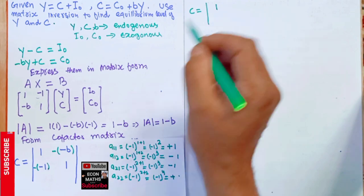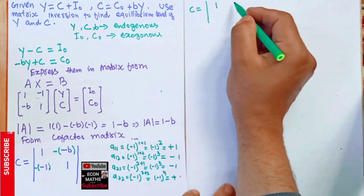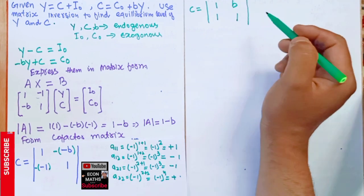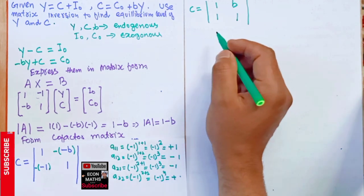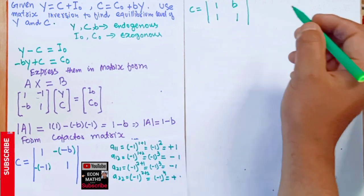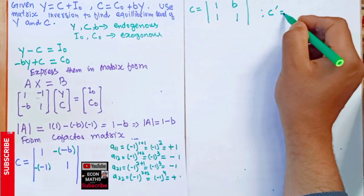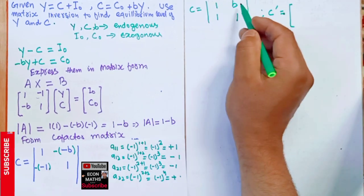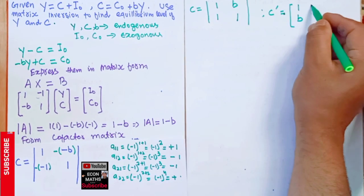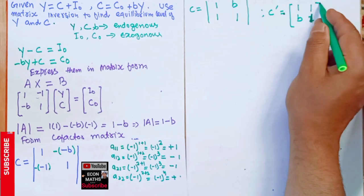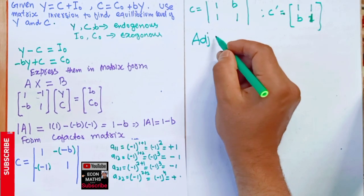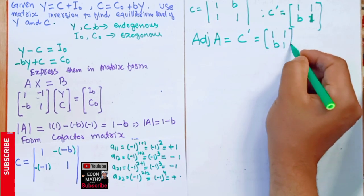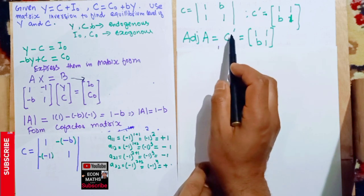Applying these signs, the cofactor matrix becomes: [1, b; 1, 1] — since the element at a₁₂ was −b with a negative sign giving +b, and the element at a₂₁ was −1 with a negative sign giving +1. Now to find the adjoint matrix, we take the transpose of this cofactor matrix: interchanging rows with columns gives adjoint A = [1, 1; b, 1].